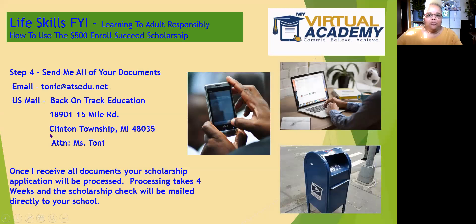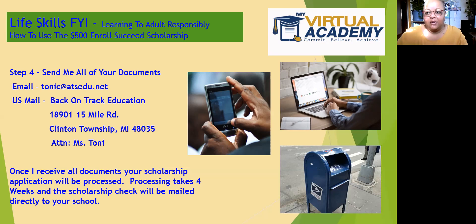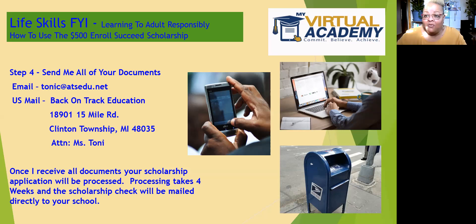Step number four: once you assemble all of these documents — your completed scholarship application and your account summary statement showing the list of classes you're enrolled in — I need you to send those documents to me. You can do this one of two ways: you can either email me the documents or you can put them in an envelope and send it by U.S. mail.